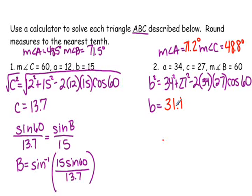All right, you should have found that B was 31.1 and then gone on to find that the measure of angle A was 71.2 degrees and the measure of angle C is 48.8 degrees. If you do not understand how I got those, please be sure to ask about them in class.